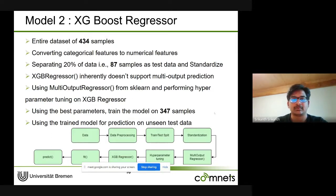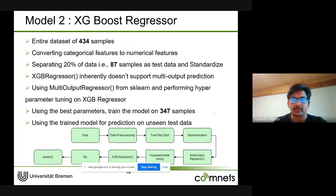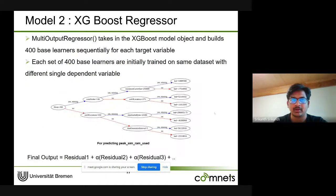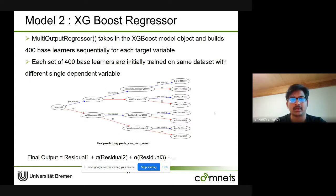The XGBoost training steps are similar to the Random Forest, except that XGBoost doesn't natively support predicting four target variables at once, so we use the MultiOutputRegressor class from scikit-learn. This creates a separate model for each target variable, resulting in four models. Each model has 400 base learners. The leaf values in each tree represent residuals, and the final output is the sum of the first residual and the weighted sum of the remaining residuals from all base learners.